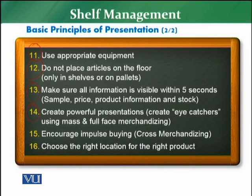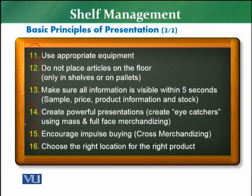The fourteenth principle is creating powerful presentations — these should be eye-catchers, massive, and full face, such as full aisle or full bay presentations, massive end-cap displays, or massive gondolas. The fifteenth principle is encouraging impulse buying through cross-merchandising: at the point of sale, ensure impulsive products like chocolates, candies, and cigarettes are prominently available, and encourage cross-merchandising.